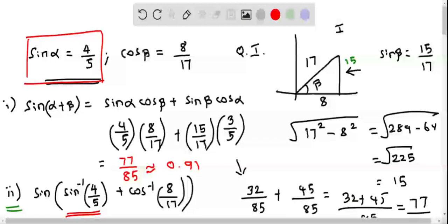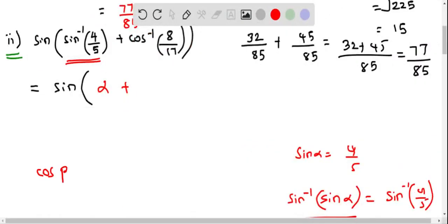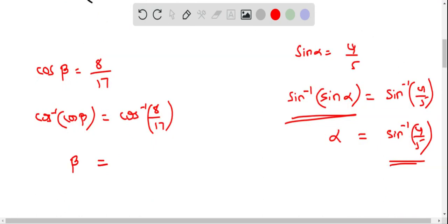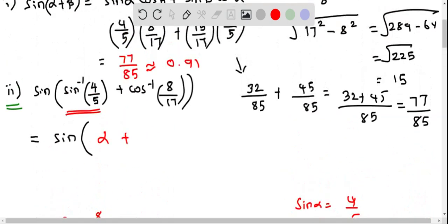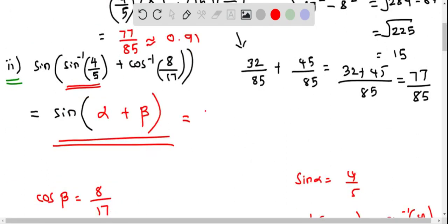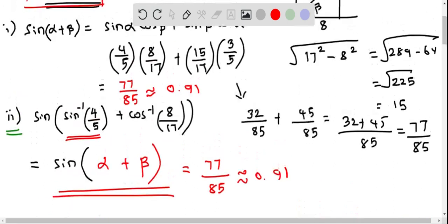In the same way, for cos beta we take cos inverse on both sides. Since cos beta equals 8 by 17, taking cos inverse on both sides gives cos inverse of cos beta equals cos inverse of 8 by 17. This implies beta equals cos inverse of 8 by 17, so we can replace cos inverse of 8 by 17 with beta. Therefore, the answer to this question is already available from the first part, which is 77 by 85, or approximately 0.91. This is how we calculate the given values.